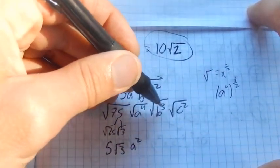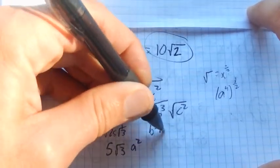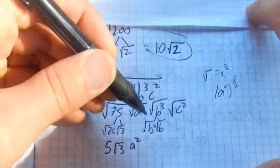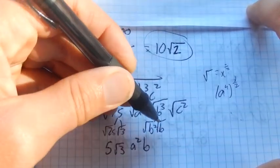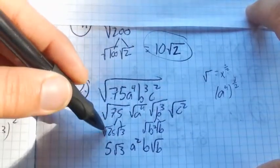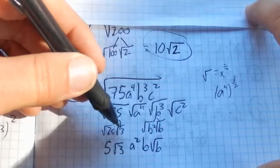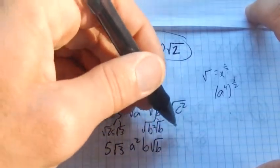Now this b cubed, I'm going to split this into b squared times b. Because I know the square root of b squared is b, and the square root of b I can't do anymore. Same thing as I did this. I split it into something I can square root easily, and something that's going to be left over I can't resolve quite yet. Square root of c squared is just c.